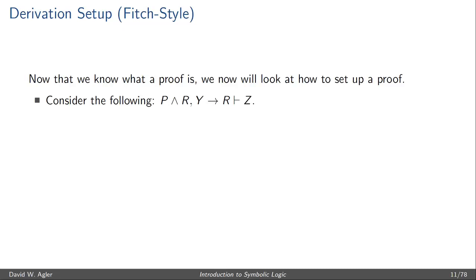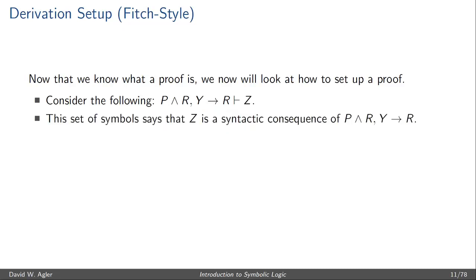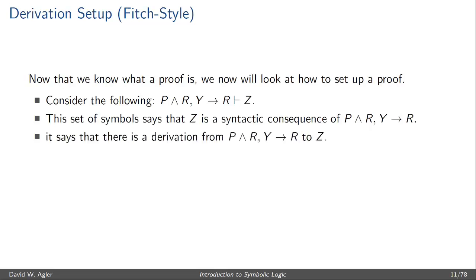Here we have a syntactic entailment: P and R, if Y then R, entail Z. What this says is that Z is a syntactic consequence entailed by P∧R and Y→R. In other words, there is a derivation or proof beginning with P∧R and Y→R that will, through a sequence of steps using the deductive apparatus, ultimately conclude in Z.